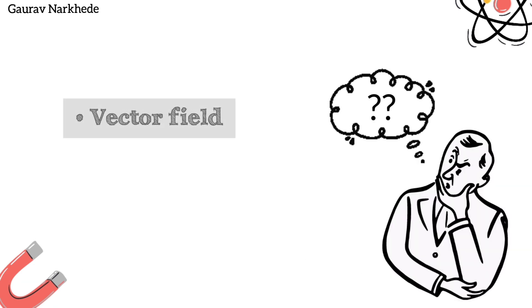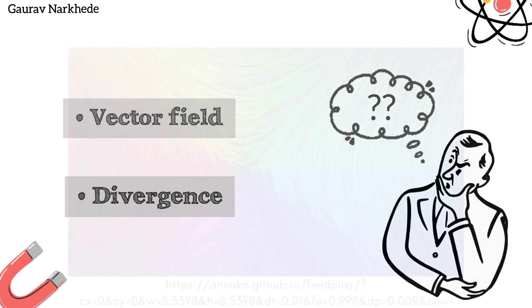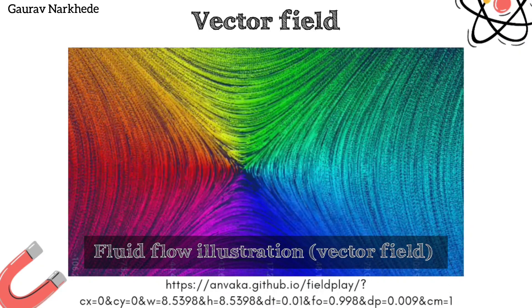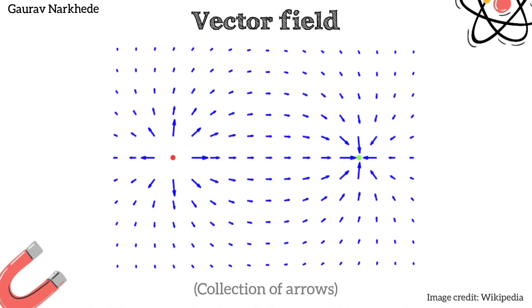What exactly are vector field and divergence? Vector field is a region in space in which there are vectors at every point. You can imagine it like a collection of arrows in space.